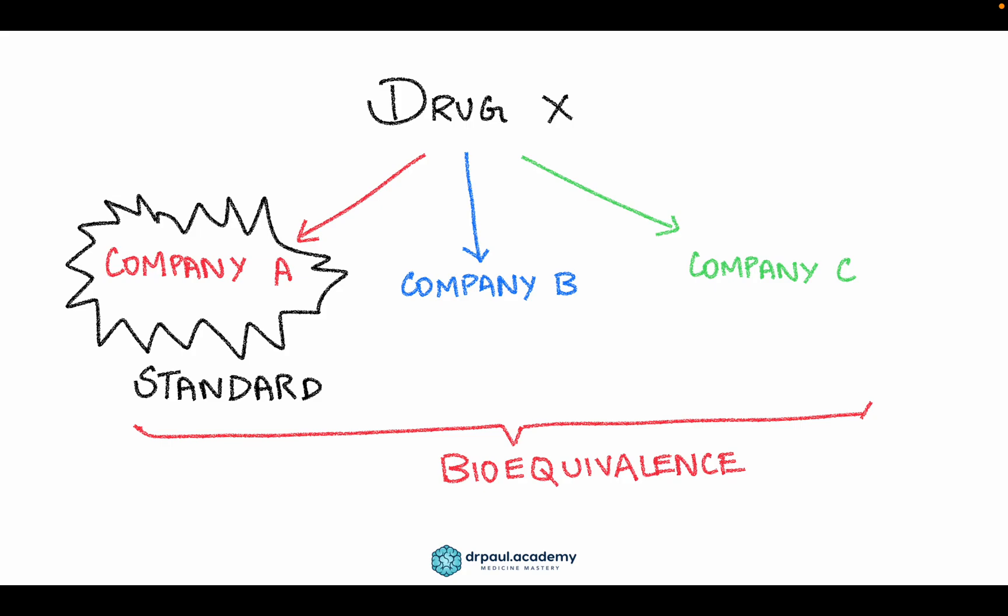Two drugs are said to be bioequivalent when their bioavailabilities are matching. So you don't have to test the drug produced by company B and company C again. You just have to make sure that their bioavailability is the same as company A's, because they're all the same drug—just different companies producing the same drugs under different trade names. That's a little bit of what you need to know about bioavailability. Hope to see you in the next video.